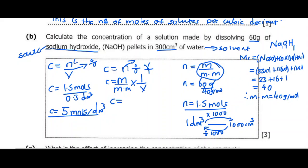Concentration equals mass over molar mass times volume. Substituting, the mass is 60 grams divided by the molar mass of 40, times the volume of 0.3. Doing the math: 60 divided by 40 times 0.3.